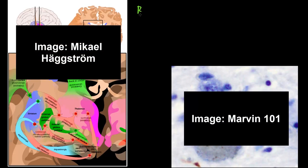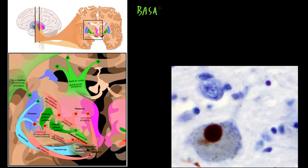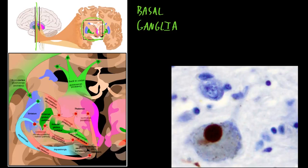The substantia nigra is one part of a collection of structures called the basal ganglia. On this illustration, if we take the brain and section it from top to bottom and look deep inside the cerebrum, all the colored areas represent this collection of structures called the basal ganglia, one part of which is the substantia nigra. The basal ganglia plays a major role in motor functions, as well as some mental functions.